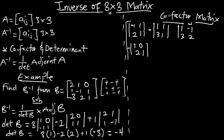Then we are going to have 2, 0, 3, 1 for the next element, and that position is going to be negative. So we are going to have 2, 1, 3, 2 for the next sub-matrix.